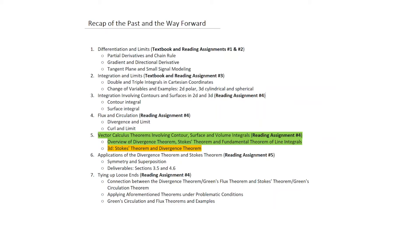Towards the end, we'll be tying up some loose ends. Those come from Reading Assignment 4 — we'll show the connection between the Divergence Theorem and Green-Flux Theorem, and Stokes' Theorem and the Green-Circulation Theorem. The Green-Circulation Theorem and Green-Flux Theorem are effectively 2D analogs of the Divergence Theorem and Stokes' Theorem in 3D. We'll also look at examples with problematic regions where we can still apply the theorems using certain tricks, and wrap up with application examples of the Green-Circulation Theorem and Flux Theorem.